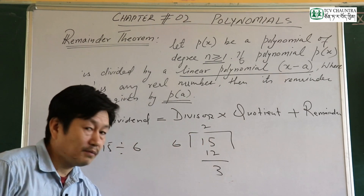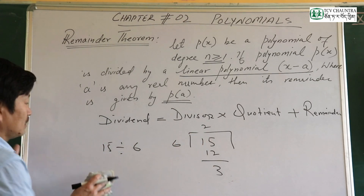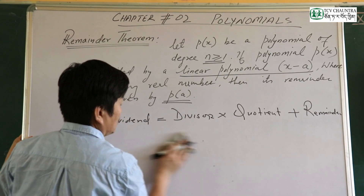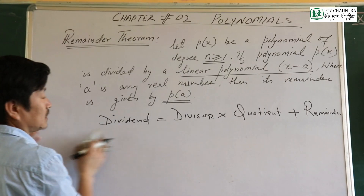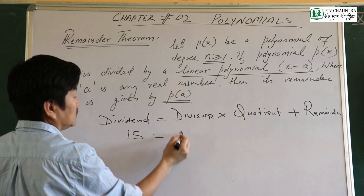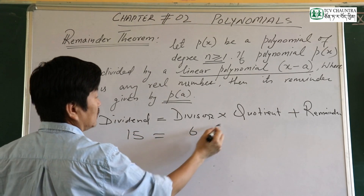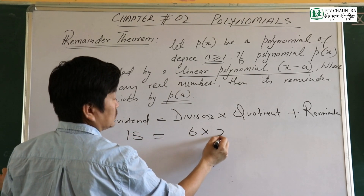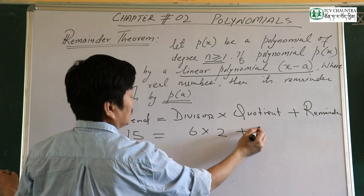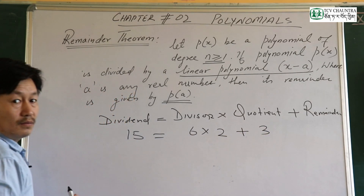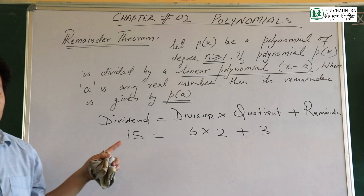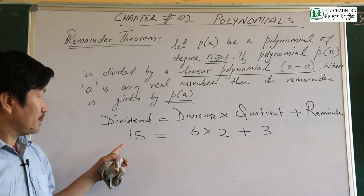For example, take 15 divided by 6. How many times does 6 go into 15? 6 times 2 is 12. Divisor is 6, quotient is 2, remainder is 3. This is the division algorithm applied to real numbers.